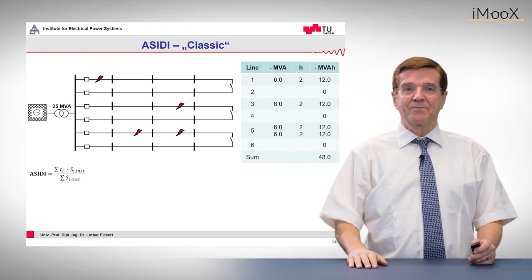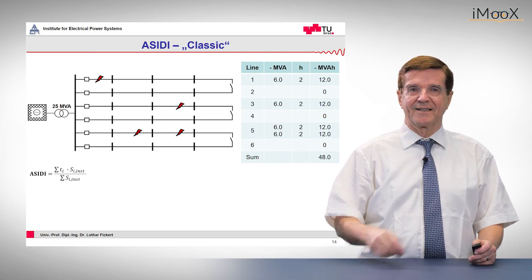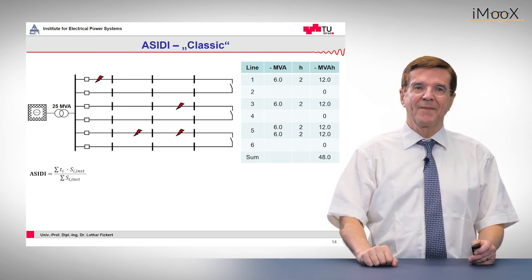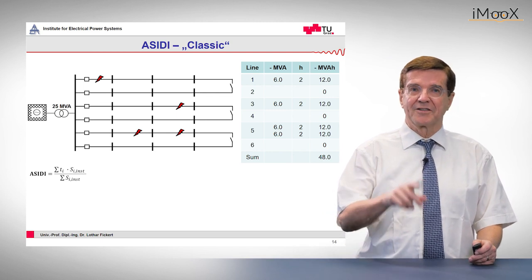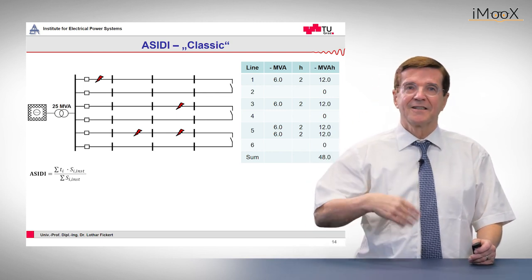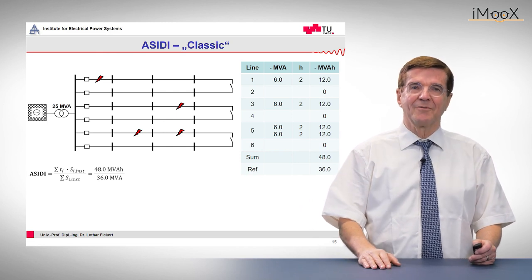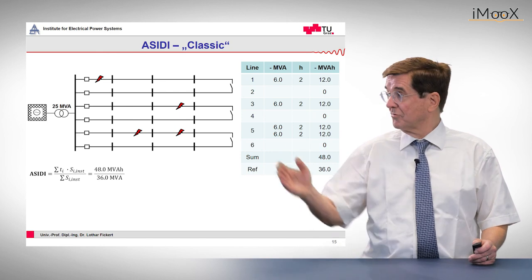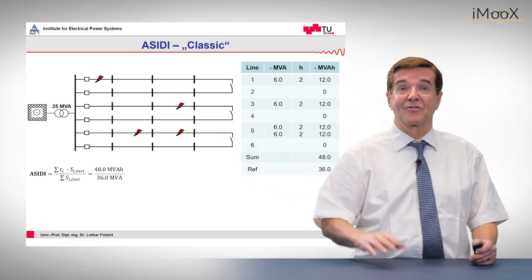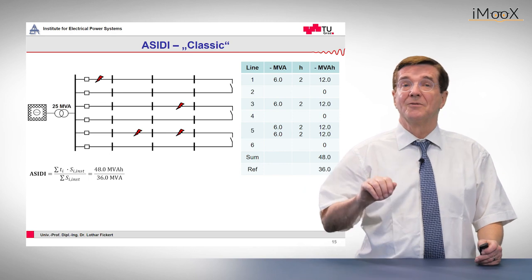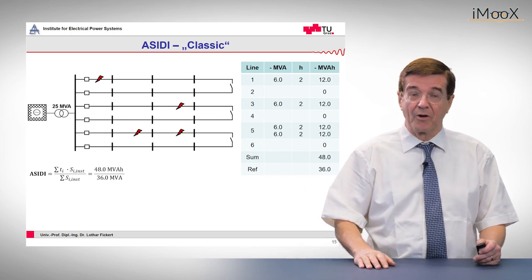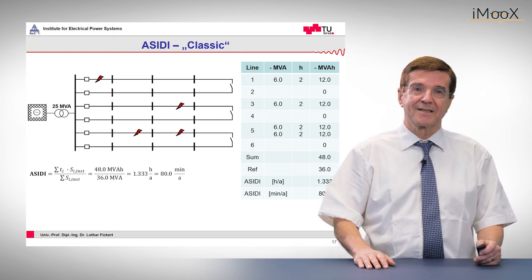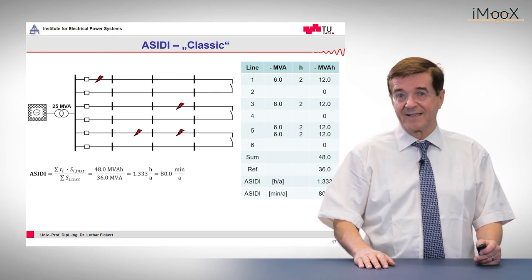Now let's feed this into the formula for the ASIDI. This is the key network reliability parameter — ASIDI means Average System Interruption Duration Index. It is the weighted sum of the outages, and in this case it results in 48 divided by 36. Remember, 36 is six feeders with six MVA per feeder, and we obtain finally 80 minutes per year as the ASIDI figure.